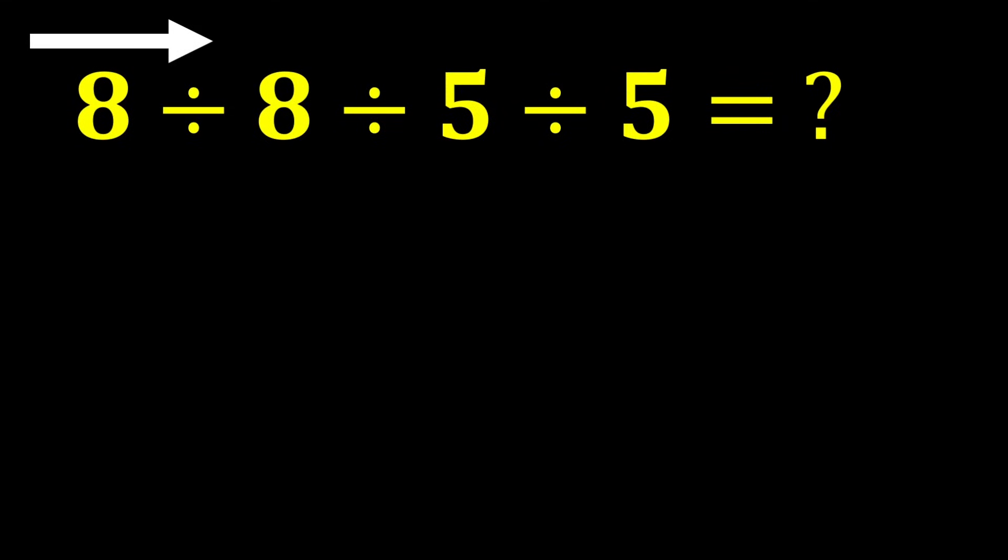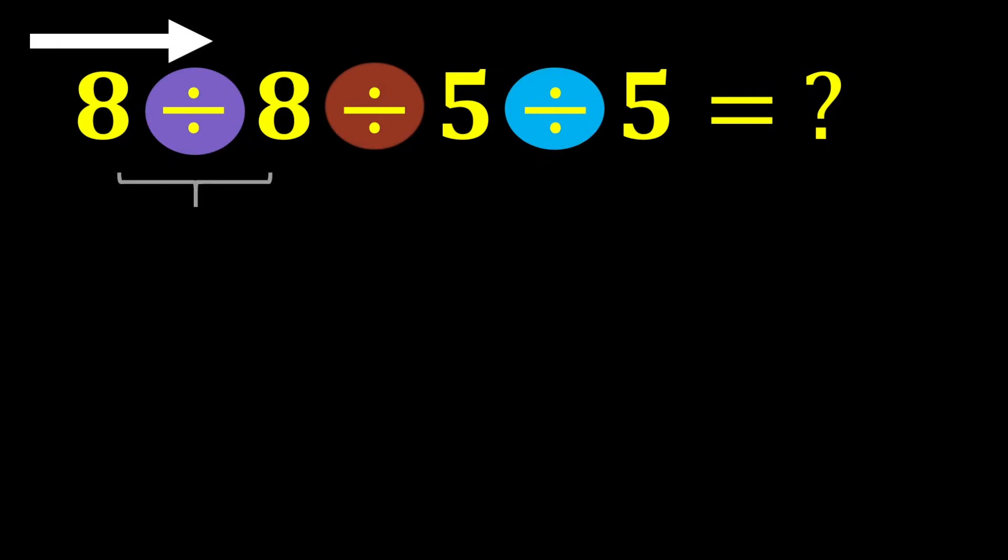First this division, then this division, and finally this division. Eight divided by eight gives us one, and one divided by five gives us one over five. In the end, we need to calculate one over five divided by five.